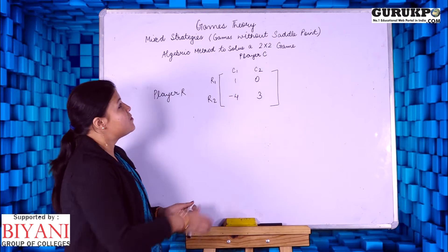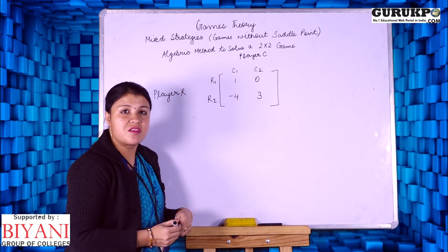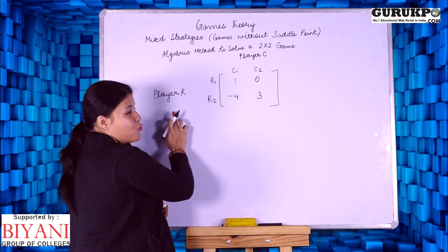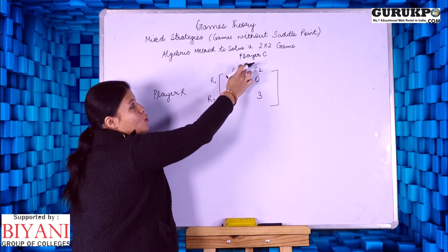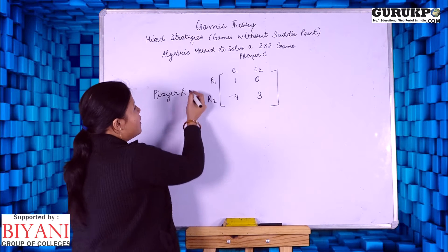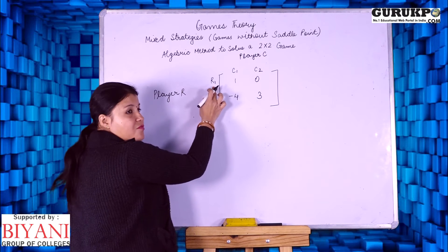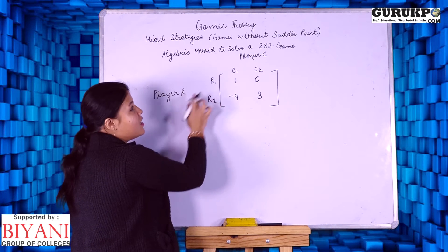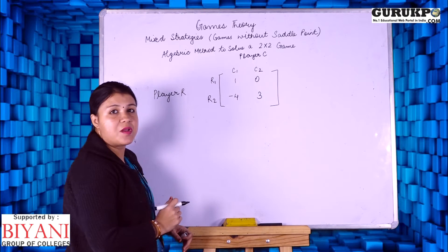Suppose this is a matrix given to us. These are row player that is player R, column player, player C. R1 and R2 are the strategies for player R and C1 and C2 are the strategies for player C.